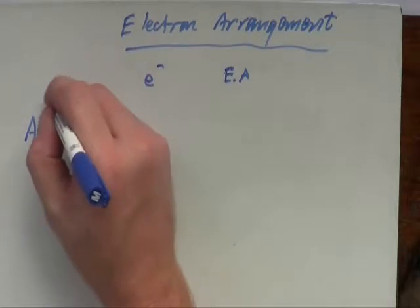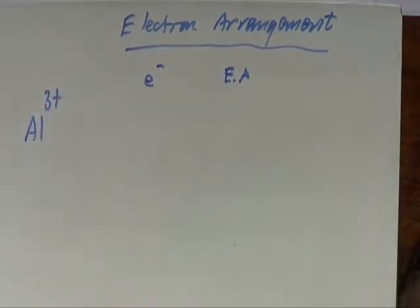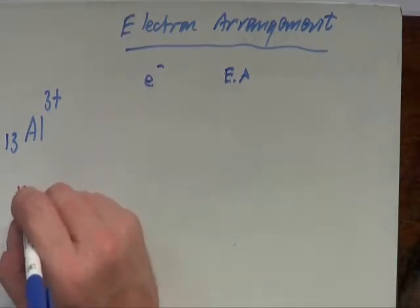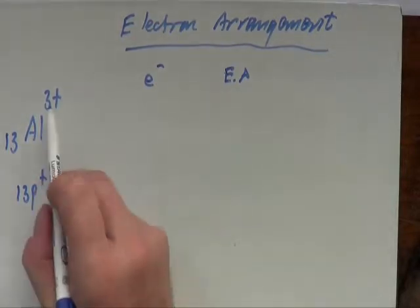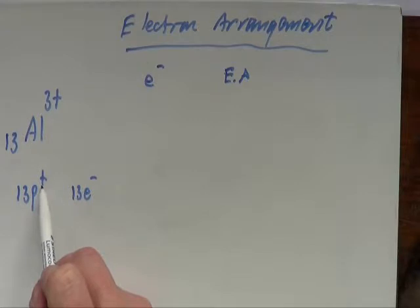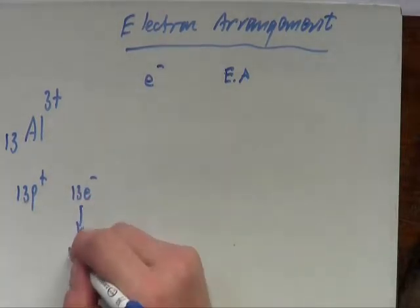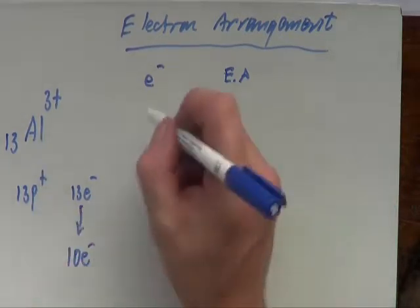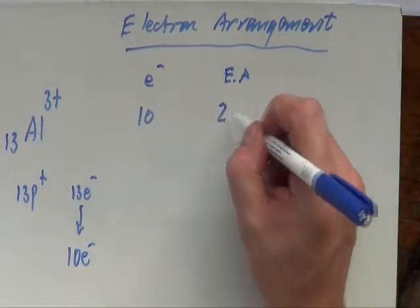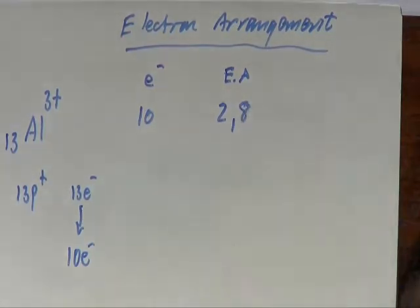Let's do aluminium as a 3+ ion. The atomic number is 13, so it must have originally had 13 protons and 13 electrons. It's now 3+, so it must have three more protons than electrons — but remember it can't gain protons, it has to lose electrons. So it must have lost three electrons, bringing us to ten electrons. That gives an electron arrangement of 2,8.